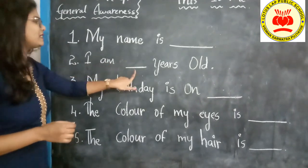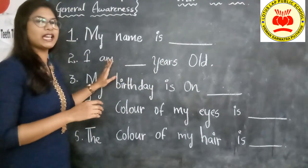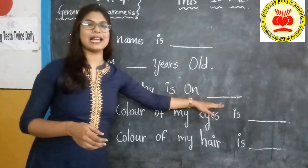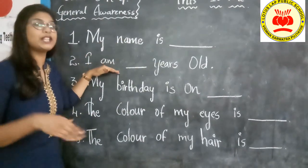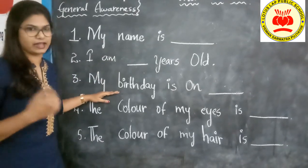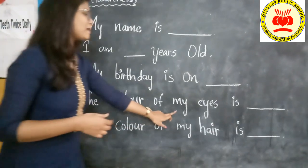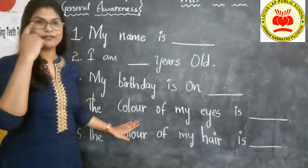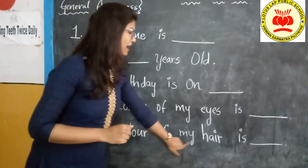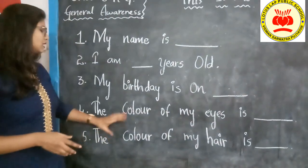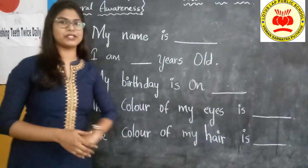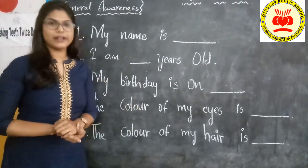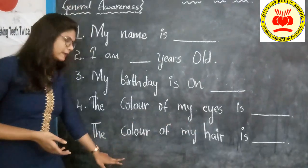Next, 'I am dash years old'. Here you have to say about your age. My birthday is on dash. So the points are: first, name; next, your age; next, your birthday. The next thing is the color of my eyes. You have to say about your eye color. The color of my hair is also important. People will have different colors of eyes and different colors of hair. So, we have included color of eyes as well as color of hair.